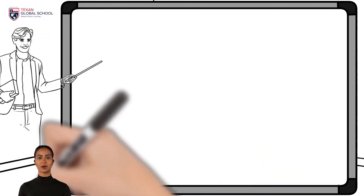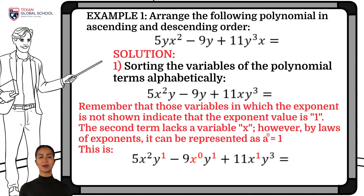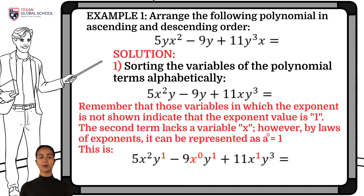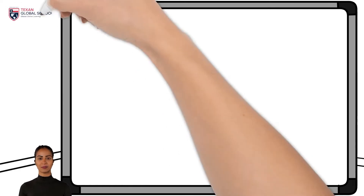In this example, we will sort a polynomial in both ascending and descending order. The first step is to sort alphabetically the variables of the terms of the polynomial. Variables where the exponent is not shown indicate that its value is 1. We can also see that the second term lacks a variable x, which can be represented as x raised to the 0 power by the laws of exponents. Since we have the variables sorted alphabetically, we can see the exponents of each term.